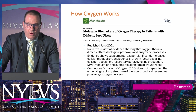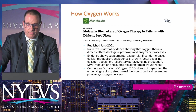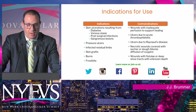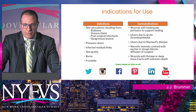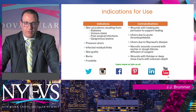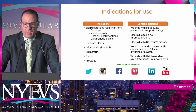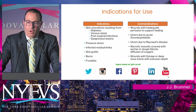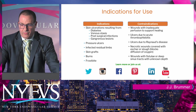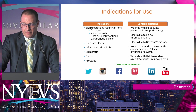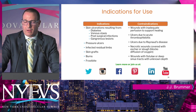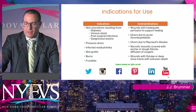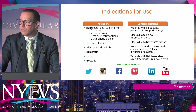A published study from 2021 on molecular biomarkers of oxygen therapy with diabetic foot ulcers shows all the different cytokine production and how it increased everything. Indications for usage — our bread and butter: skin ulcerations from diabetes, venous stasis, post-surgical infections, gangrenous lesions, pressure ulcers, infected residual limbs, skin grafts, burns, and frostbite. Contraindicated with wounds with inadequate perfusion to support healing, ulcers due to thrombophlebitis, Raynaud's disease, any vasospastic disorders — this will not work. Necrotic wounds covered by eschar or large blocks of necrotic tissue, and wounds with fistula or deep sinus tracts with unknown depth. We want to clean out our wounds before starting this therapy.